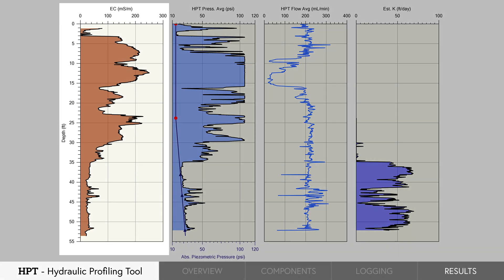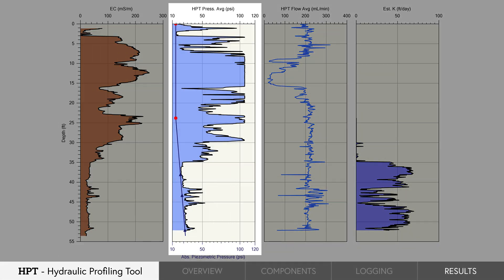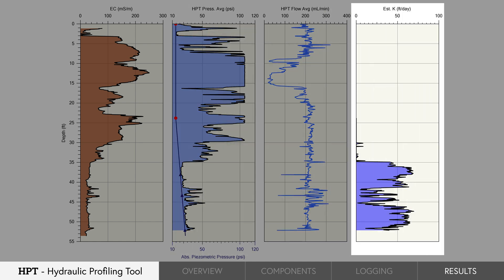A typical HPT log consists of electrical conductivity, HPT pressure response, HPT flow rate, and estimated K.